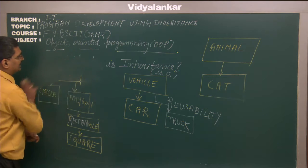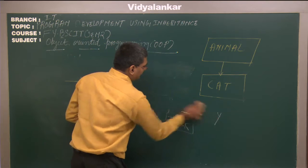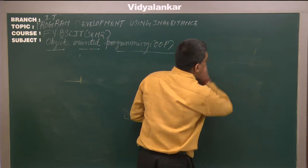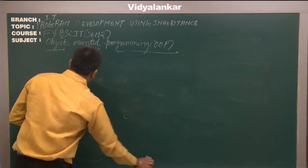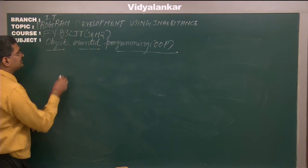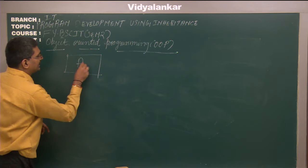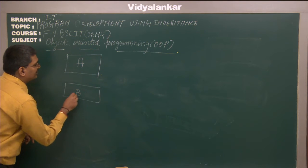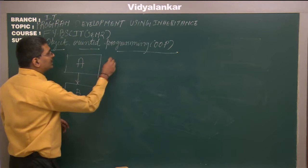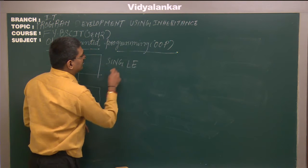Now we will look at the different types of inheritance. The first and simplest type is single inheritance, in which we have a base class A and a derived class B. Derived class B inherits from A. Since there is only a single parent and a single child, this is known as single inheritance.